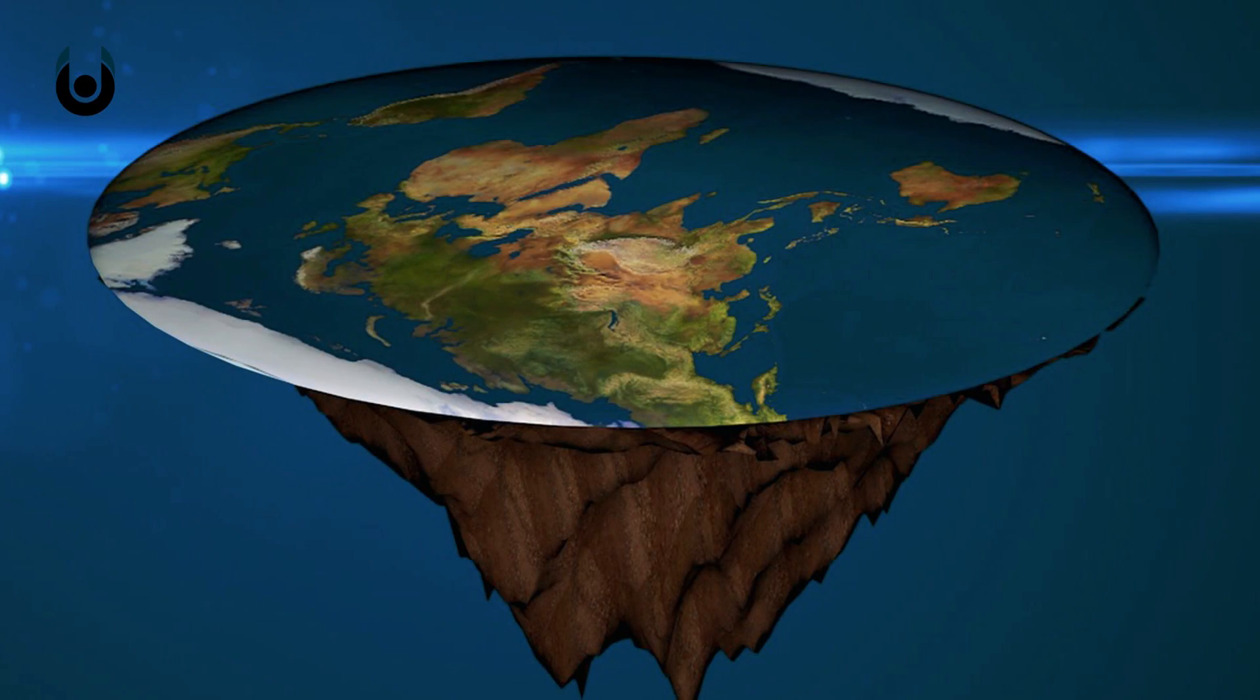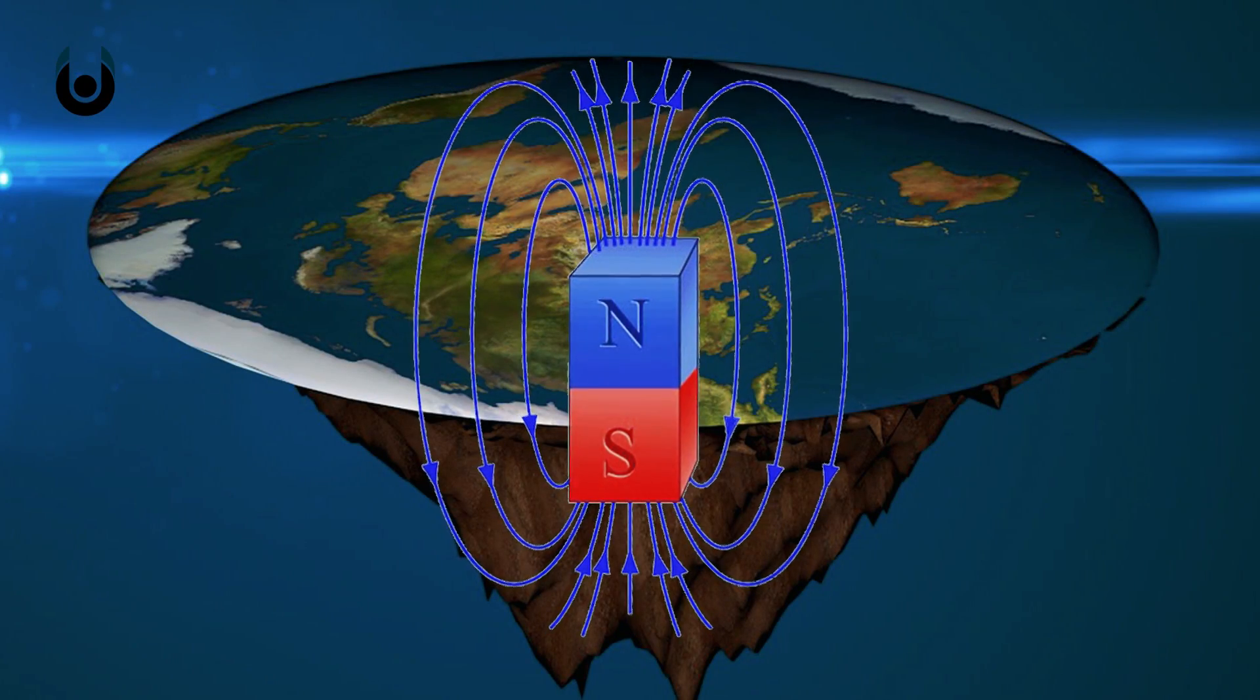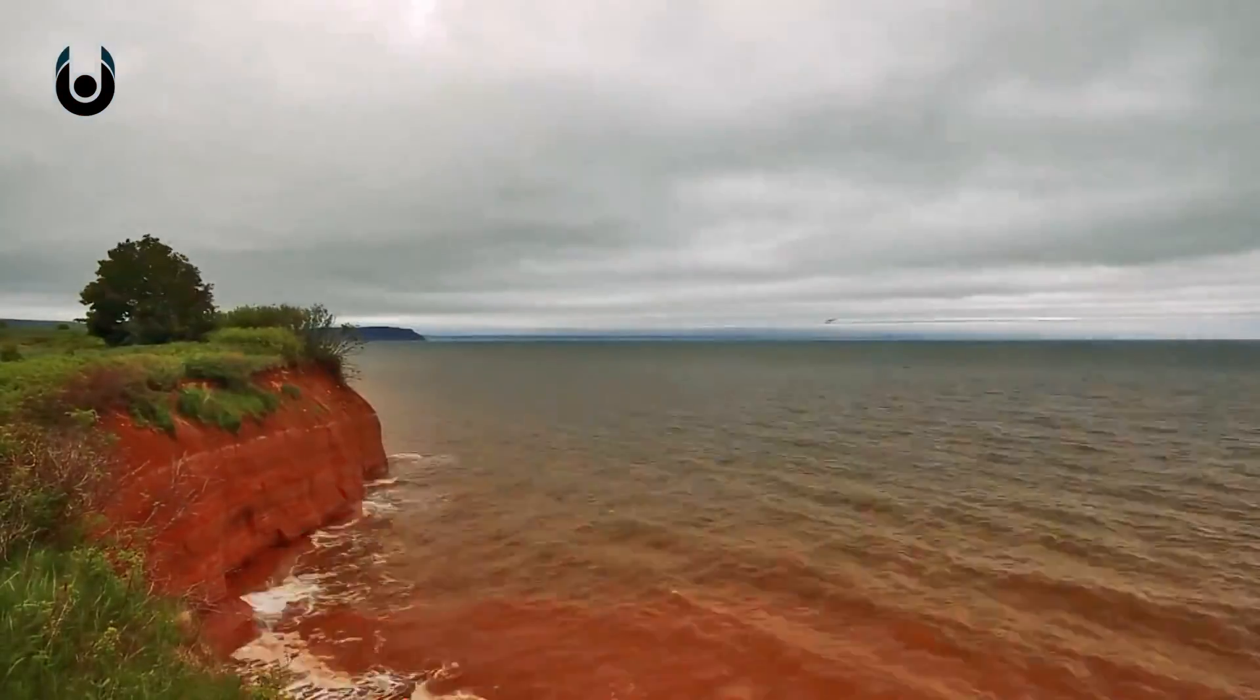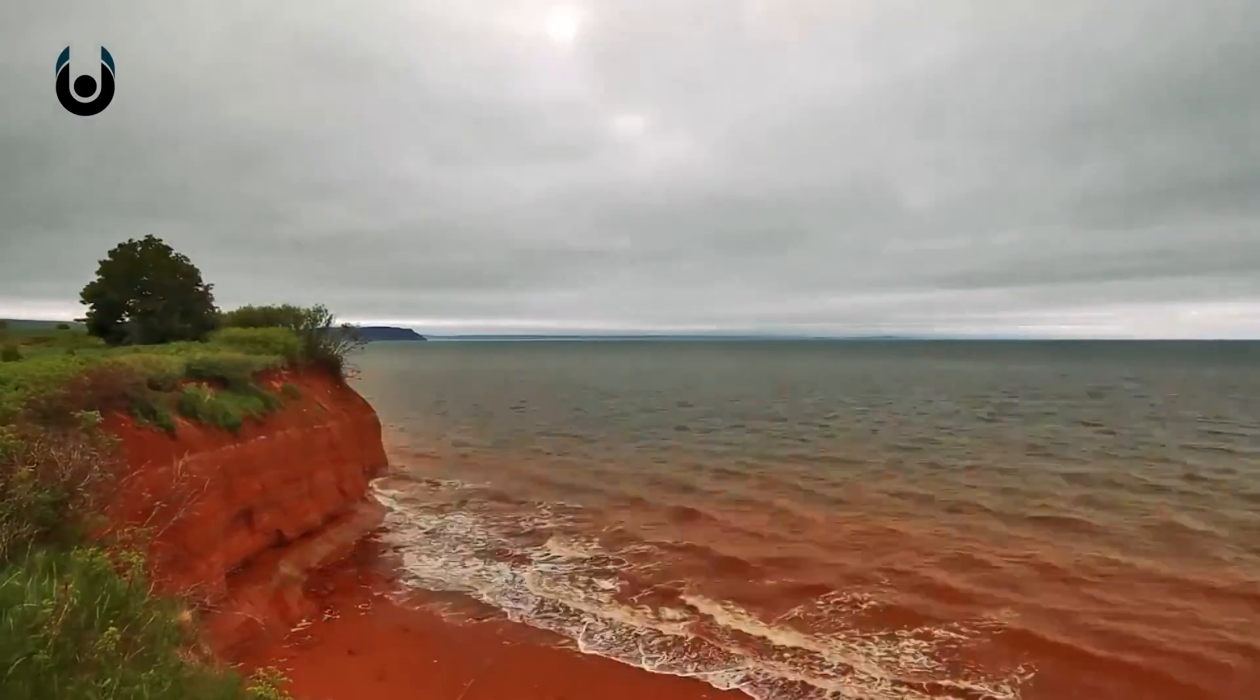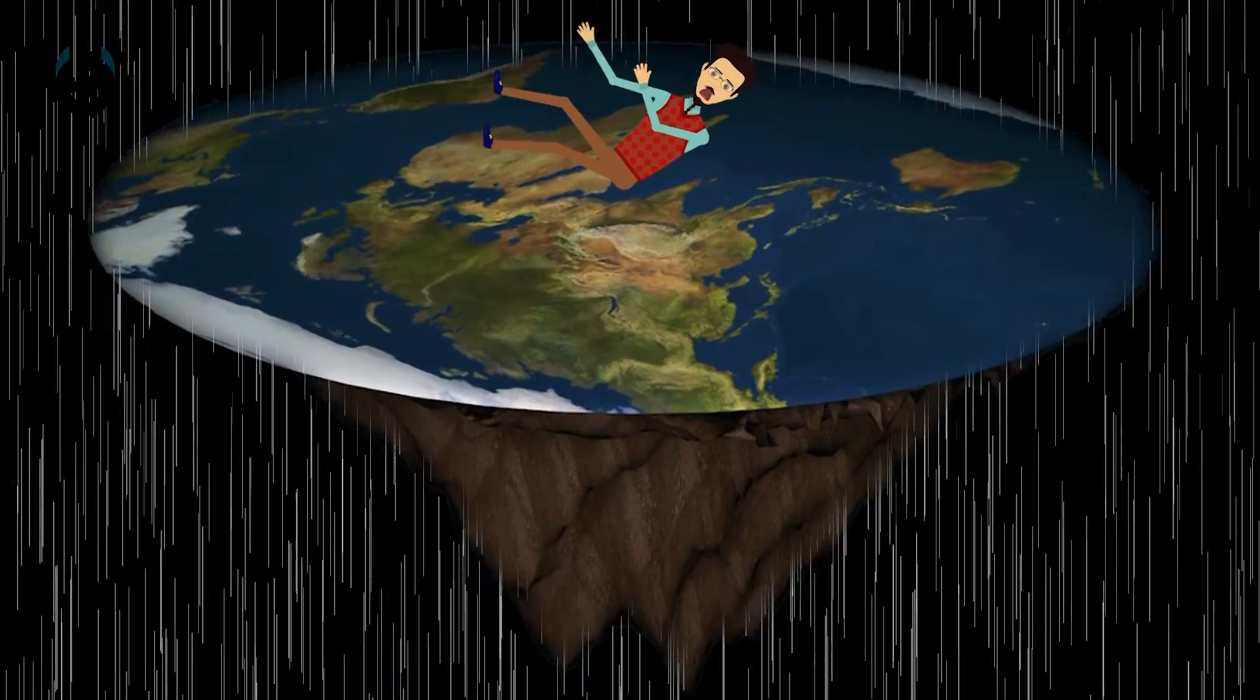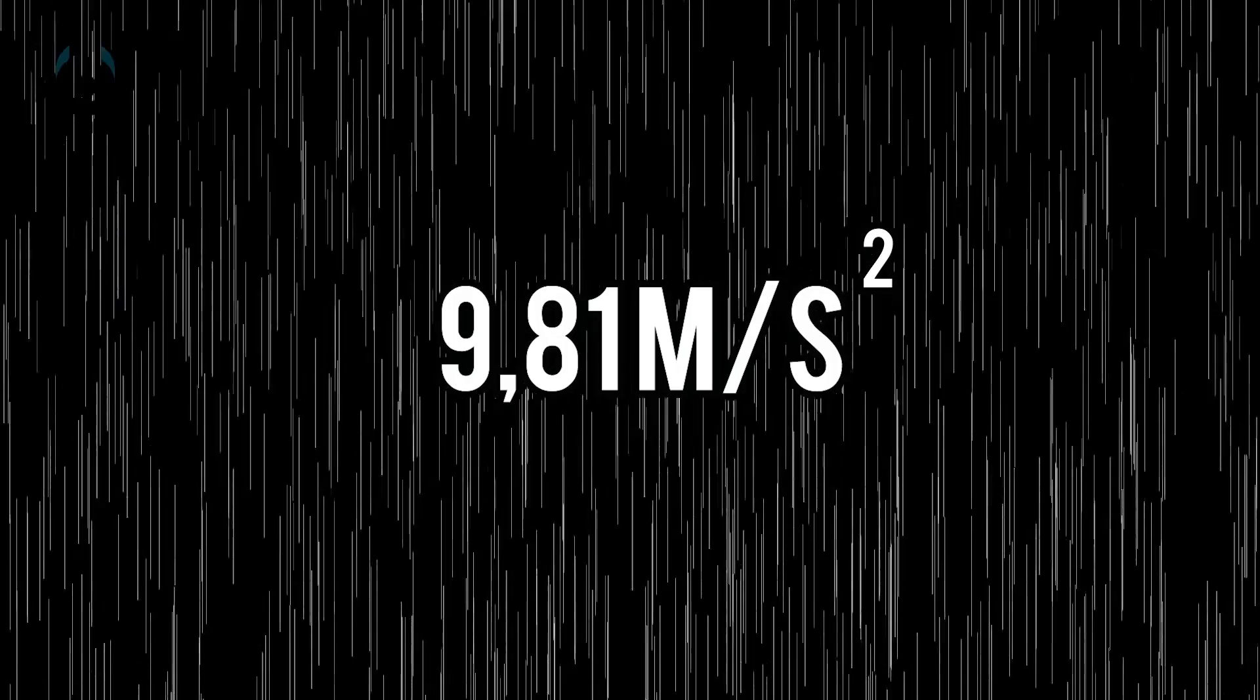The flat Earth theory suggests that the tides are caused by the activity of the Earth magnet that is at the bottom of the sea. It causes the change of sea levels. Earth's gravity is an illusion, they say. Objects do not accelerate downward; instead, the disk of Earth accelerates upward at 32 feet per second squared, 9.8 meters per second squared, driven up by a mysterious force called dark energy.